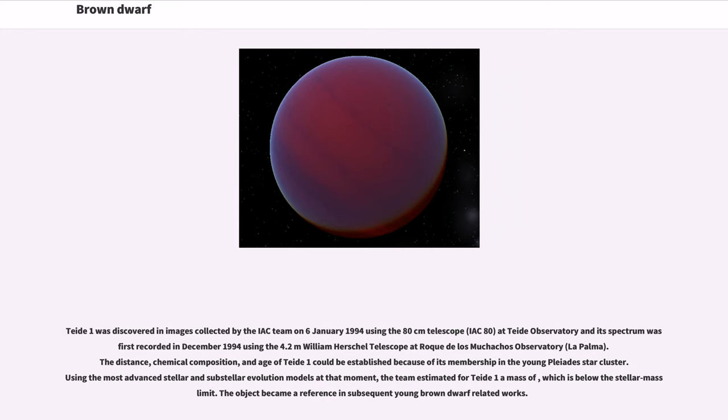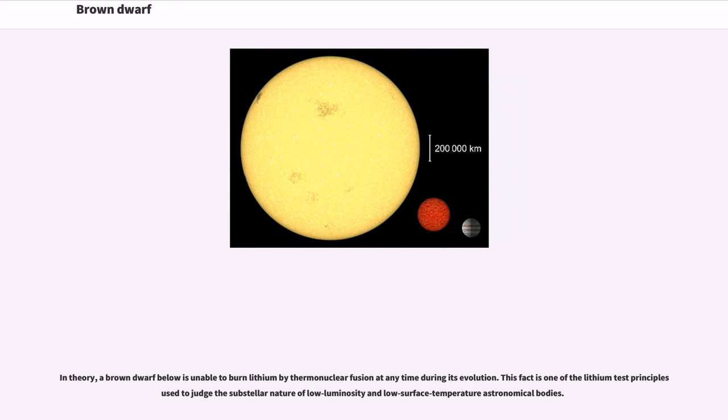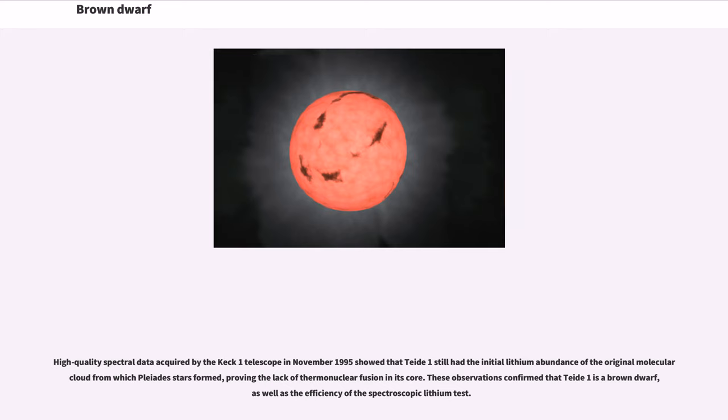The distance, chemical composition, and age of Teide 1 could be established because of its membership in the young Pleiades star cluster. Using the most advanced stellar and substellar evolution models at that moment, the team estimated for Teide 1 a mass below the stellar mass limit. High quality spectral data acquired by the Keck I telescope in November 1995 showed that Teide 1 still had the initial lithium abundance of the original molecular cloud from which Pleiades stars formed, proving the lack of thermonuclear fusion in its core. These observations confirmed that Teide 1 is a brown dwarf, as well as the efficiency of the spectroscopic lithium test.